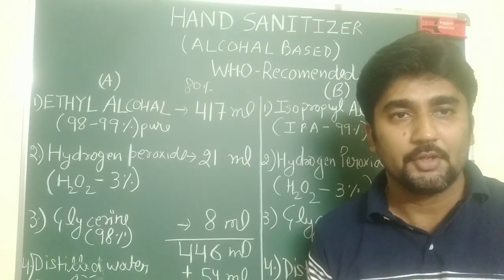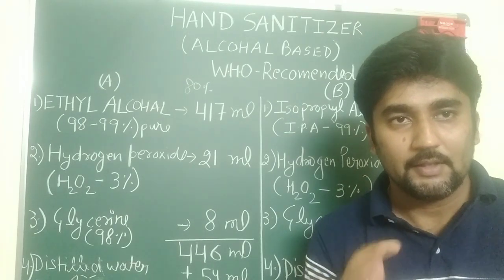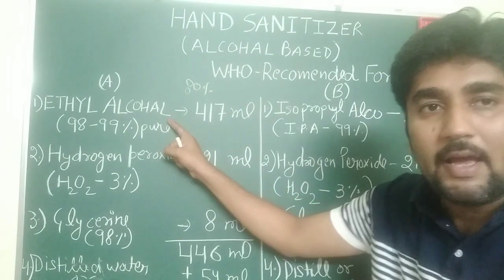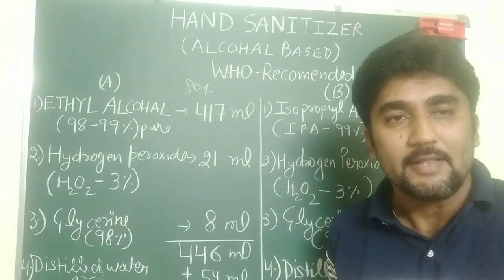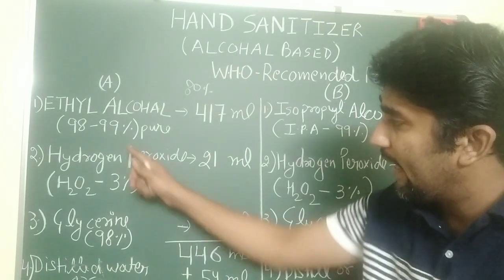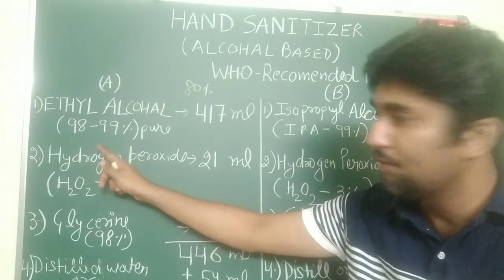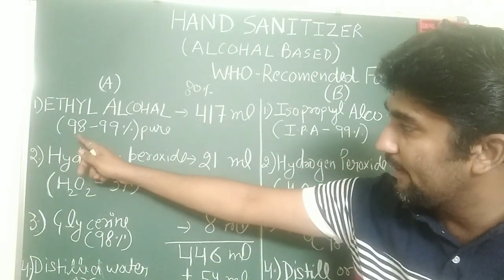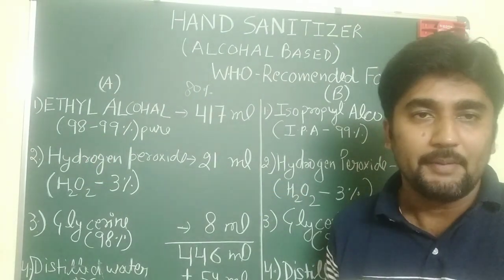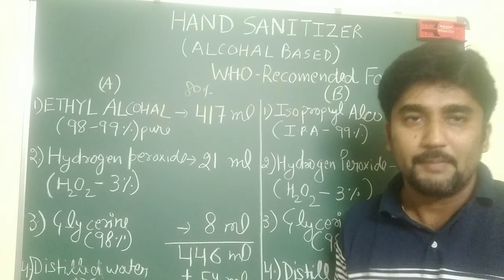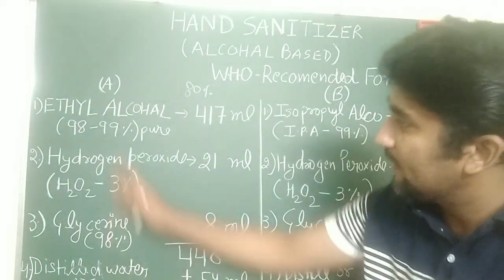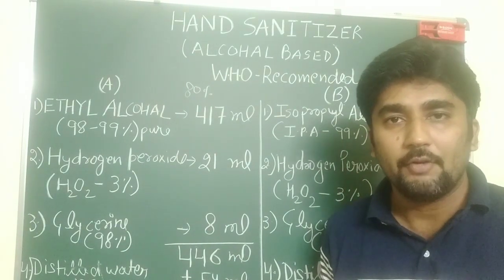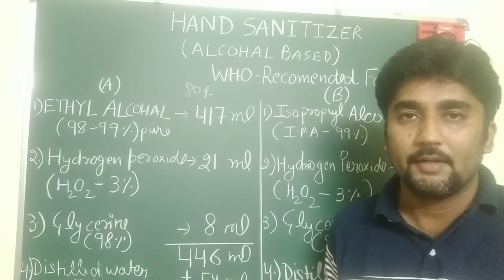We will first discuss Formulation A. Note down the chemicals and ingredients you require. Number one: you require ethyl alcohol, commonly known as ethanol. You should be careful about its purity — it should be 98 to 99% pure. When you buy it, just check for 98 to 99%; otherwise it will be difficult to make a perfect formulation. Number two: you will require hydrogen peroxide, and its purity or percentage required is 3%.